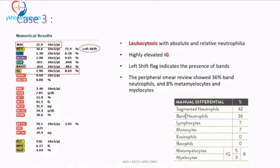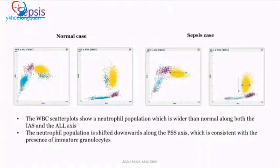The peripheral smear breakdown matched the printout very well, validating the analyzer. Whenever a new analyzer is used, manual slide review of approximately 100 cases is needed for validation. Here it tallied well, identifying metamyelocytes and myelocytes with 36% band forms. The scatter plots showed a neutrophil population wider than normal in both IAS and PSS, consistent with the presence of immature granulocytes.